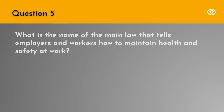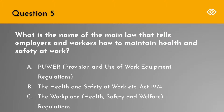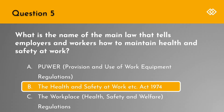Question 5. What is the name of the main law that tells employers and workers how to maintain health and safety at work? A. The Provision and Use of Work Equipment Regulations. B. The Health and Safety at Work Etc. Act 1974. Or C. The Workplace Health, Safety and Welfare Regulations. The correct answer is B. The Health and Safety at Work Etc. Act 1974.